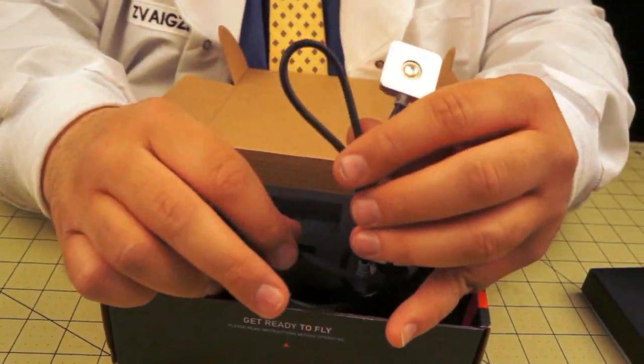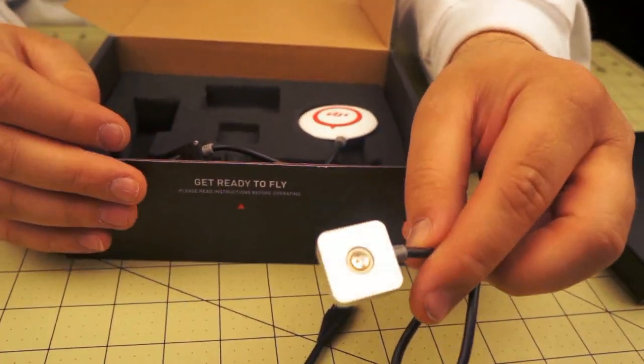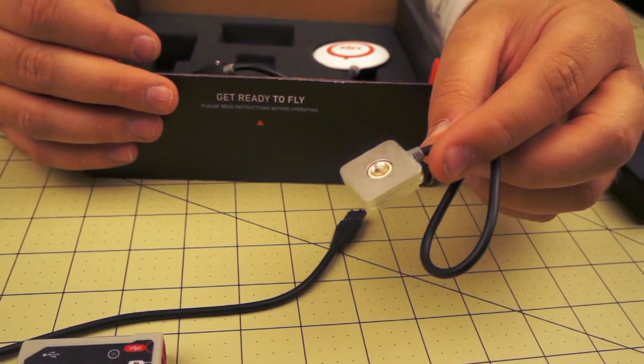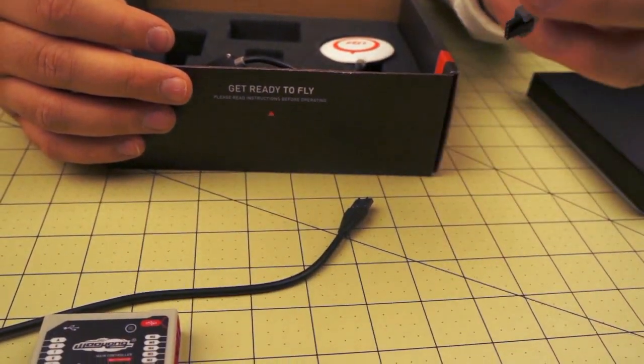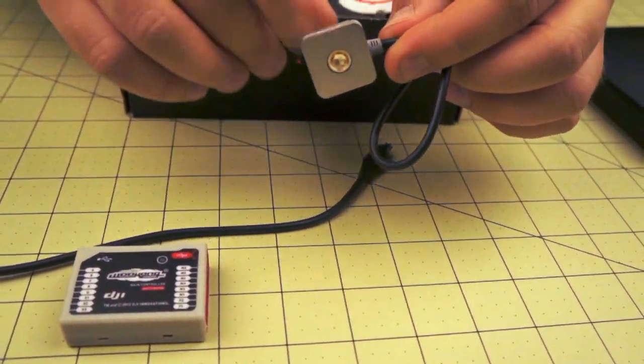This is an LED indicator. It will let you know if your GPS is locked on properly, what mode you're in, ready to fly or not. Very important. You can mount that somewhere. It's metal, which is kind of nice.